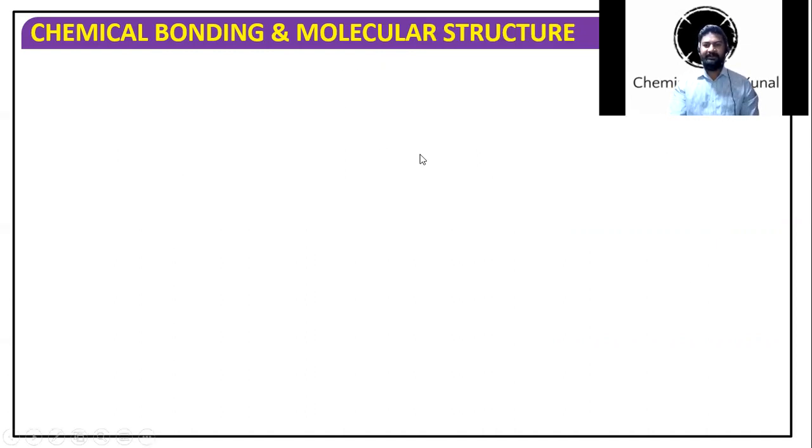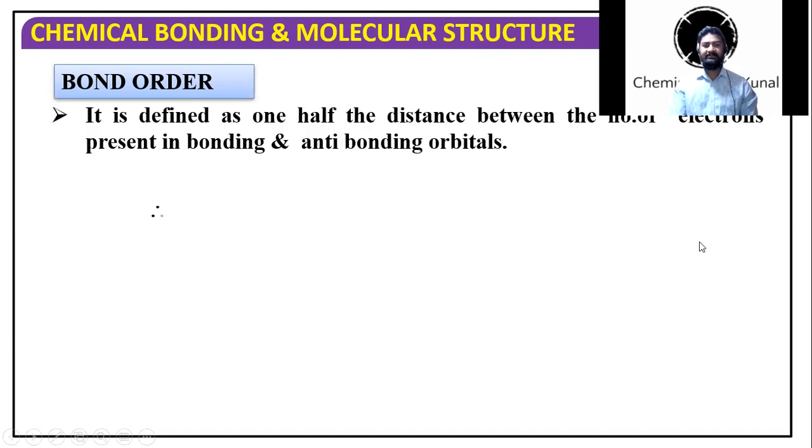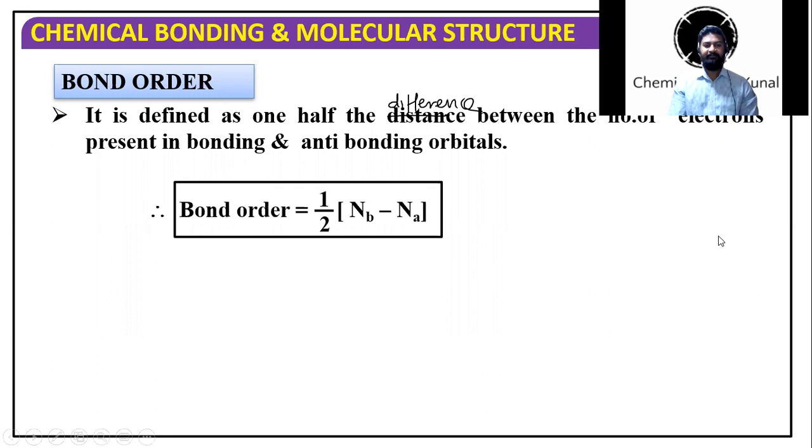First of all, let us understand what bond order is. Bond order is nothing but the difference between bonding electrons minus anti-bonding electrons. So basically half the difference between number of bonding electrons and number of anti-bonding electrons: Bond order = 1/2 [Nb - Na]. That is the conceptual definition.